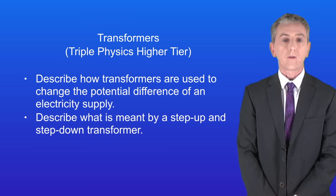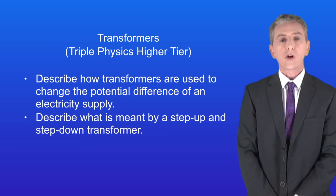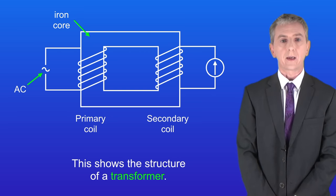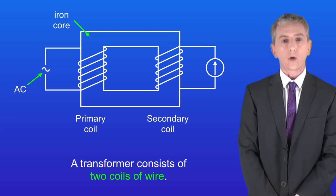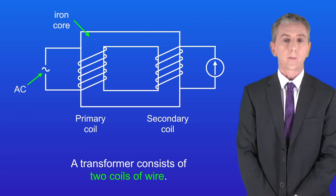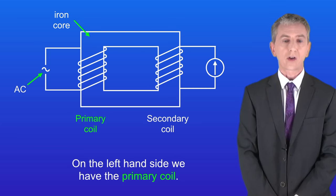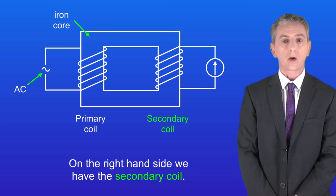Some students think that transformers is a tricky topic but I promise you it's easier than it looks, so stick with it. I'm showing you the structure of a transformer here. A transformer consists of two coils of wire: on the left-hand side the primary coil, and on the right-hand side the secondary coil.